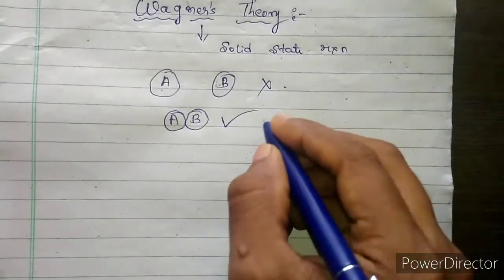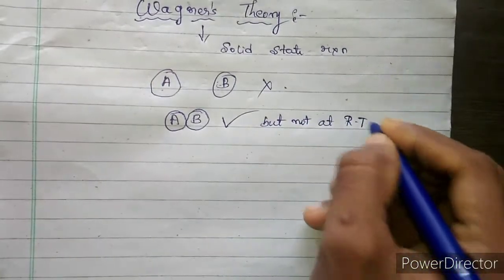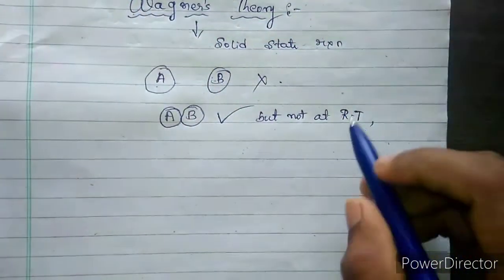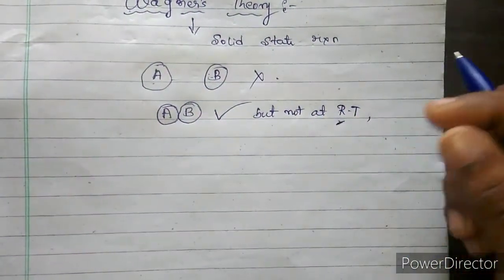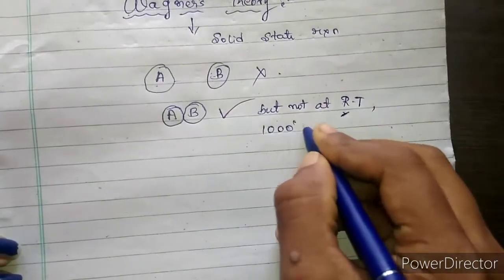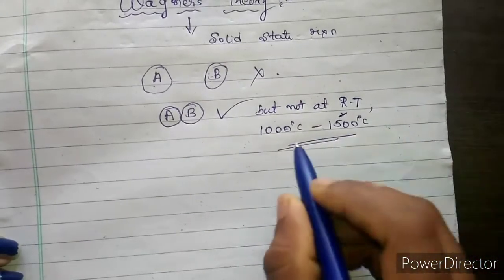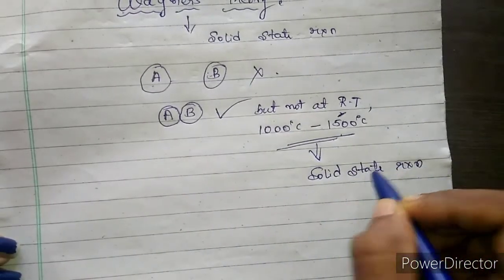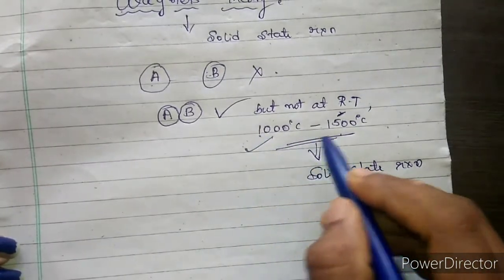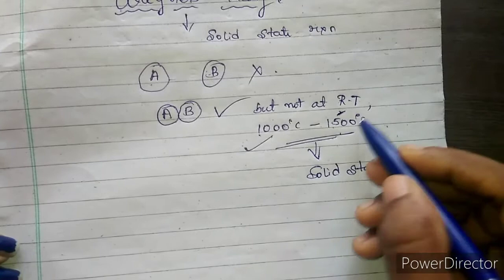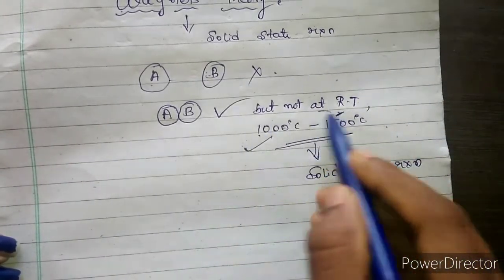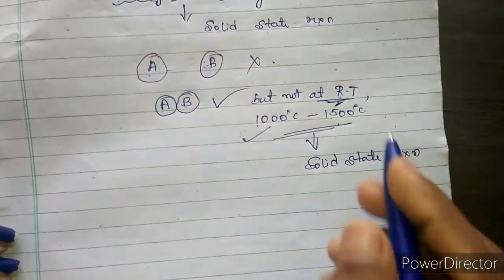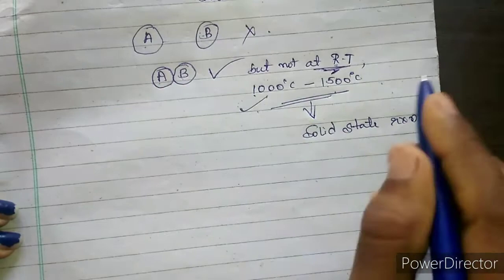The reaction is possible only at higher temperature, not at room temperature. If you take two stones and bring them together, no reaction will happen at room temperature. But at higher temperatures — that is in the range of 1000°C to 1500°C — you can see the solid state reaction. The solid state reaction does not take place at room temperature even if you keep two solids in contact.